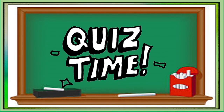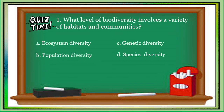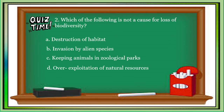Listen carefully and choose the letter of the best answer. Write your answer on your paper. Number 1: What level of biodiversity involves a variety of habitats and communities? Letter A: Ecosystem Diversity. Letter B: Population Diversity. Letter C: Genetic Diversity. Letter D: Species Diversity. Number 2: Which of the following is not a cause for loss of biodiversity? Letter A: Destruction of Habitat. Letter B: Invasion by Alien Species. Letter C: Keeping Animals in Zoological Parks. Letter D: Overexploitation of Natural Resources.